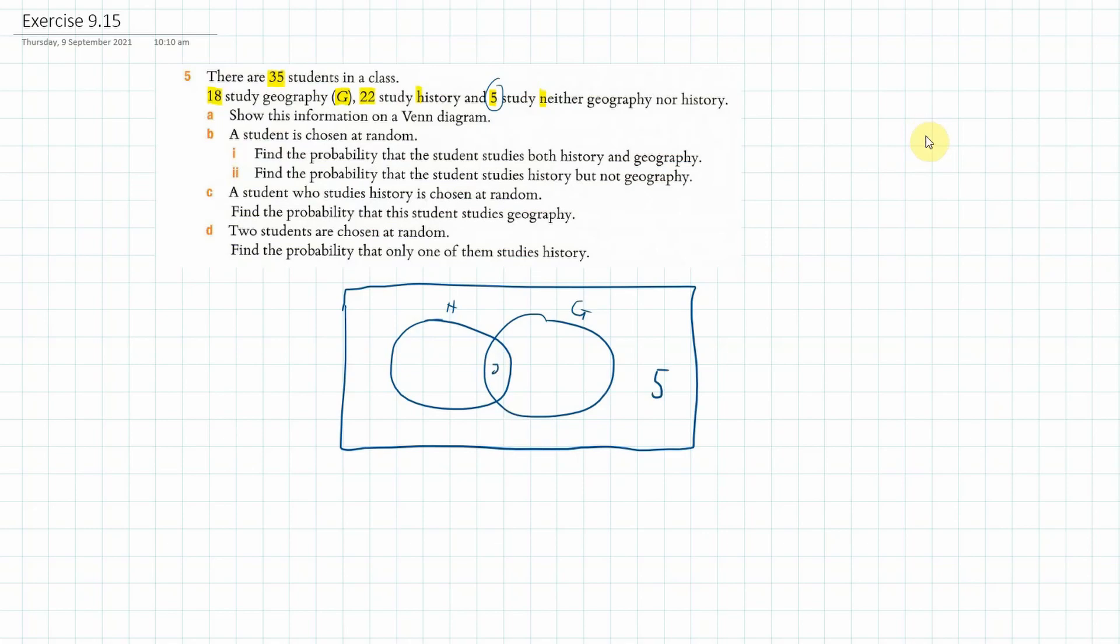So what we do in these cases, we say we don't actually know what's in there. I'm going to go for Geography, we're going to go 18 subtract x in this part. And for the History, we're going to go 22 minus x in this part.